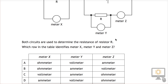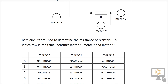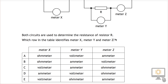Let's move this up and have a look at the options. Meter X is an ohmmeter, meter Y is a voltmeter, and meter Z is an ammeter. So A looks to be the correct answer, and we're finished.